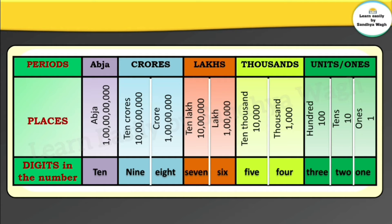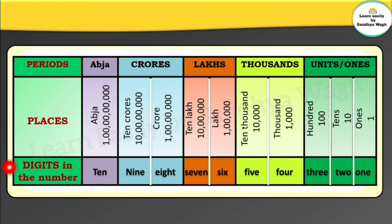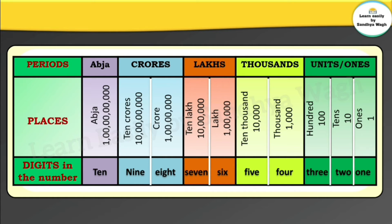To read and write large numbers, we use a place value chart — the Indian place value chart. The chart has five periods: units period, thousands period, lakhs period, crores period, and abja period. The first three places from the right form the units period, containing ones, tens, and hundreds.